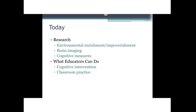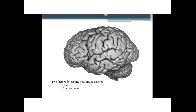Here is our agenda for today. First, we are going to walk through an overview of three areas of research — types of research on poverty in the brain — and then we are going to look at what we can do as educators.